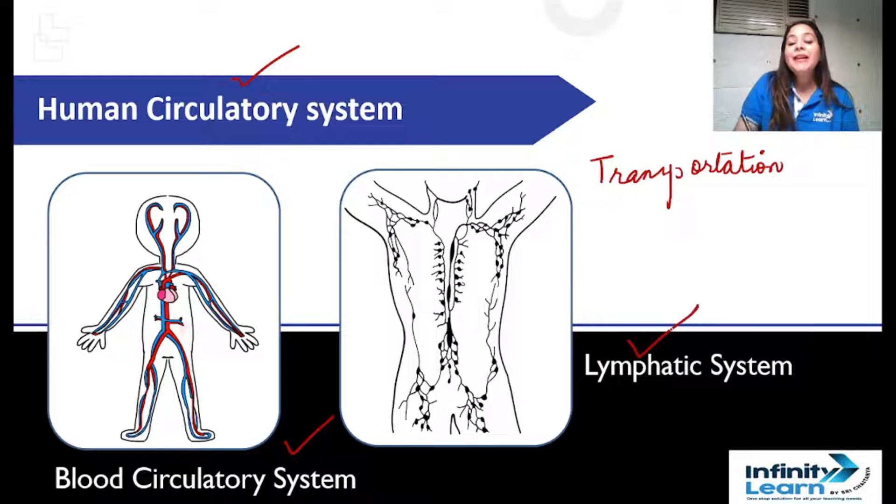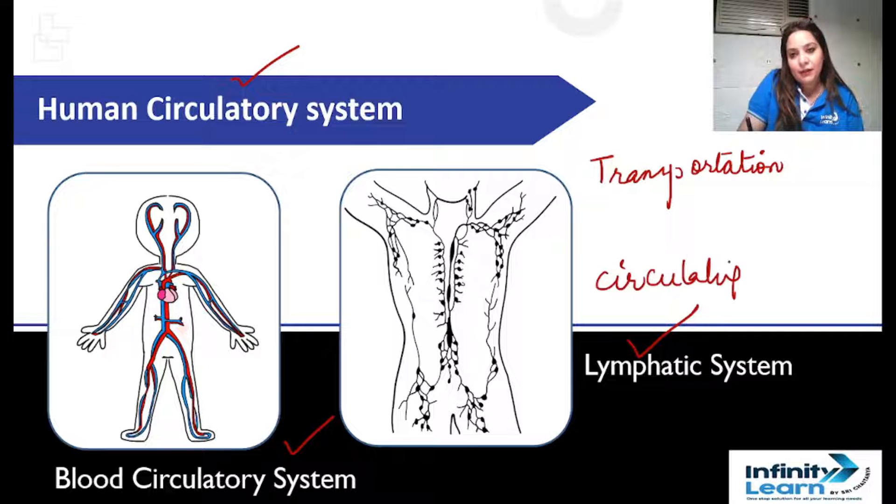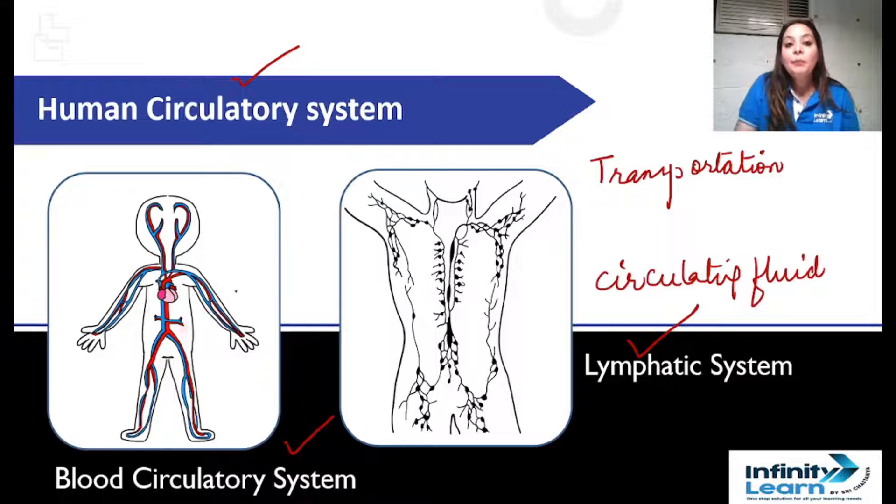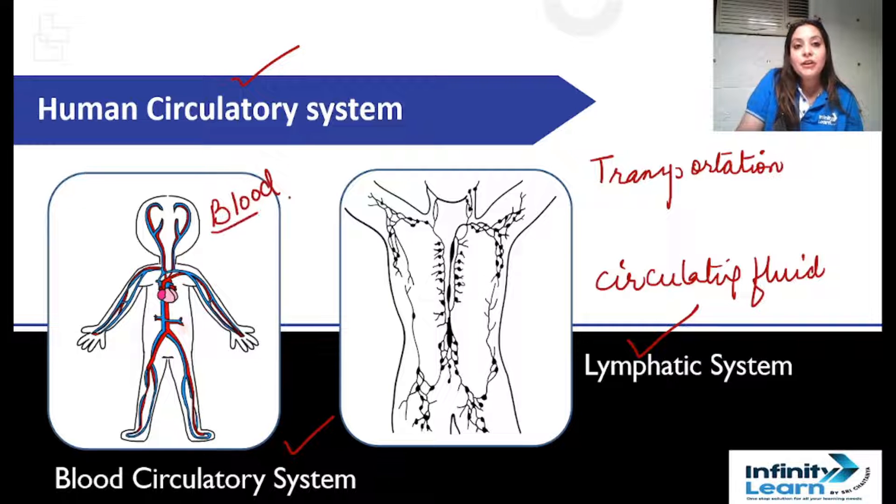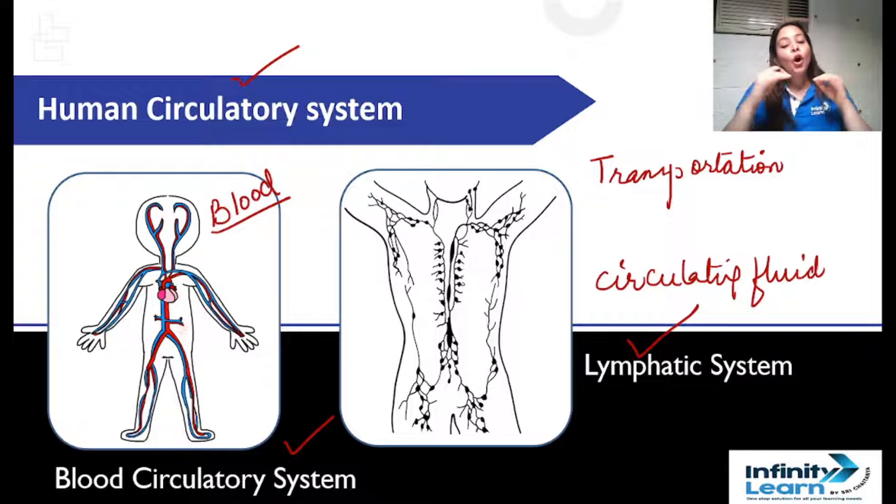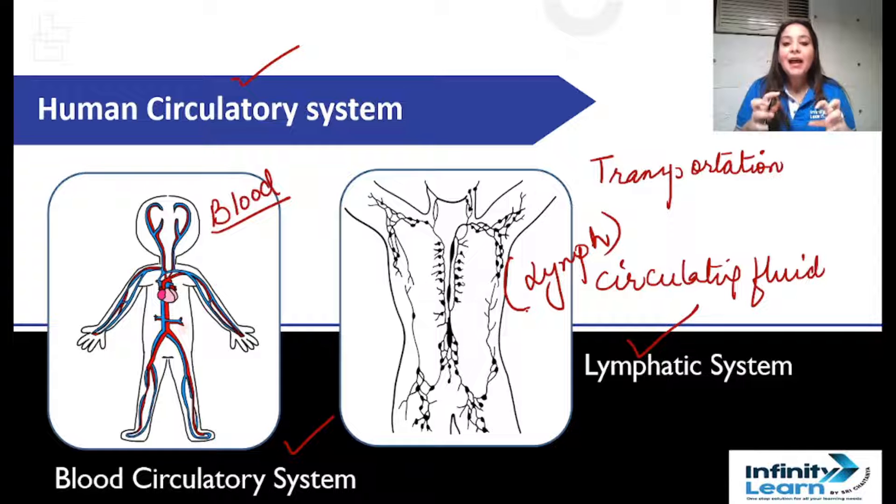For that, in our body there are two circulatory systems. One is blood circulatory system, another is lymphatic system. In both blood circulatory system and lymphatic system, there is a circulating fluid present. The circulating fluid which transports things.